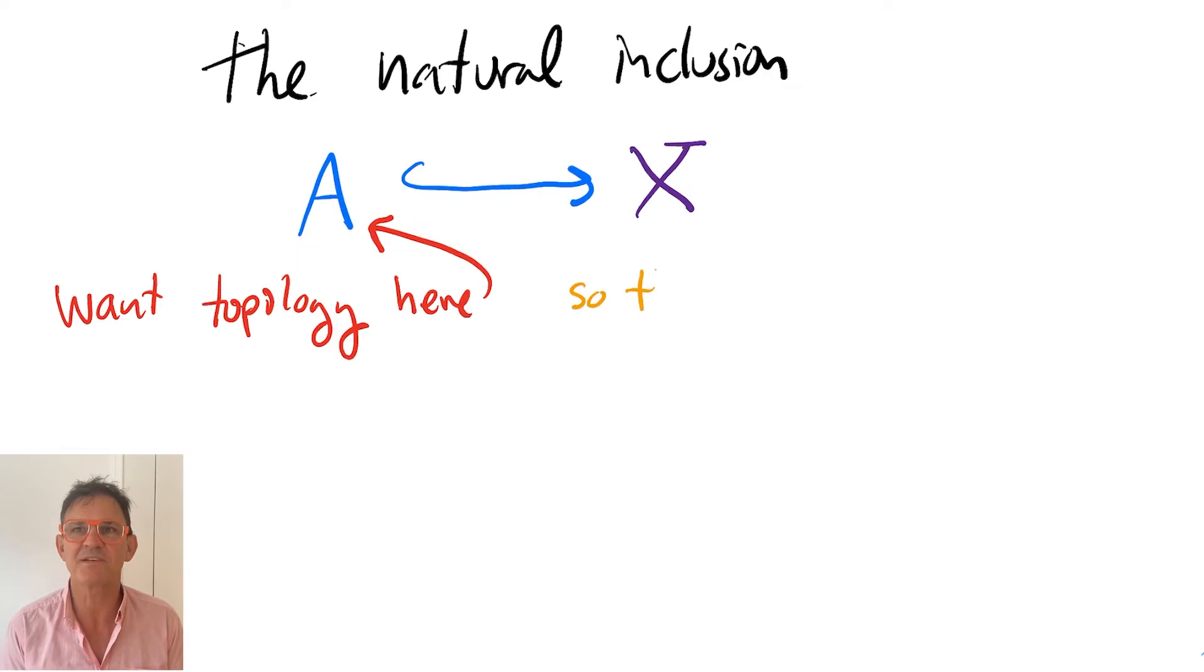So whatever the subspace topology on A will turn out to be, you want the natural inclusion to be continuous. This doesn't completely determine the subspace topology, but it puts a lower bound on what it can be.